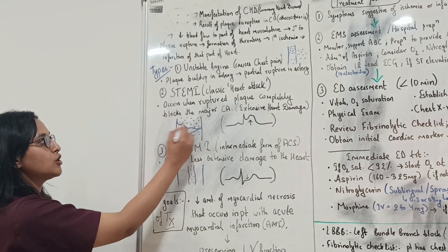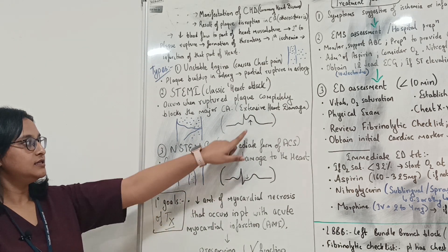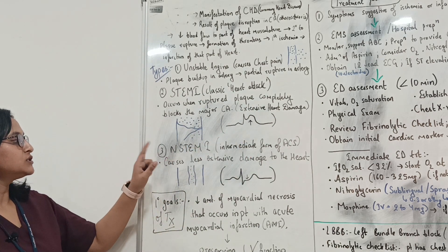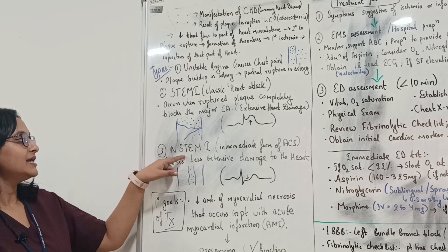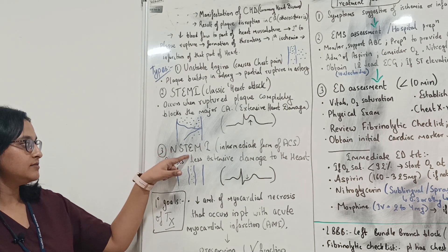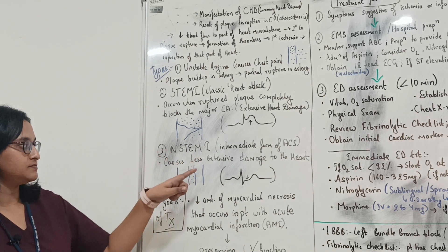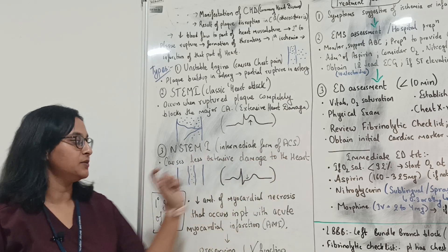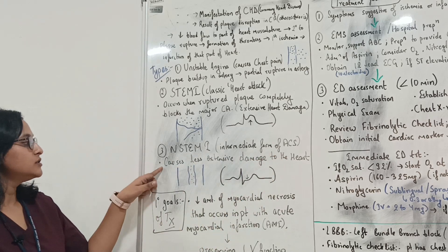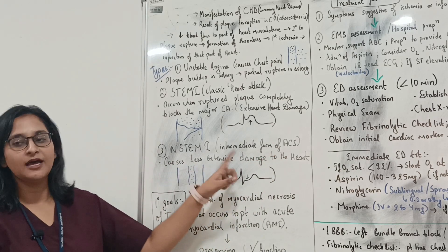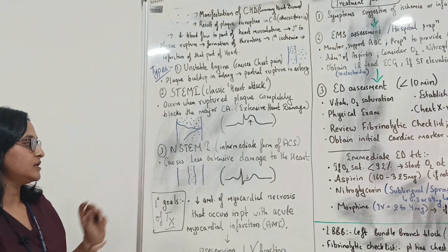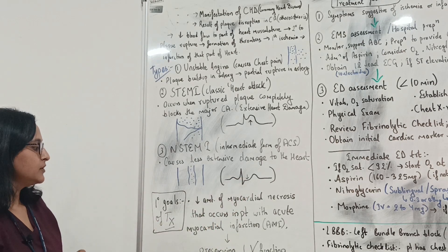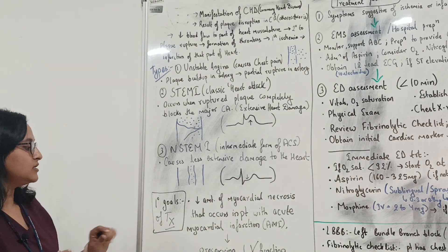The third type is non-STEMI — non-ST segment elevated myocardial infarction — which is an intermediate form of acute coronary syndrome causing less extensive damage to the heart. As you can see, there is ST depression in this case.